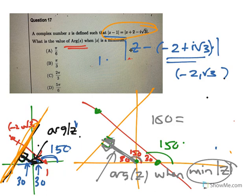That's what that line's running at. And 150 is 5π on 6, which is D.